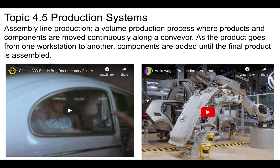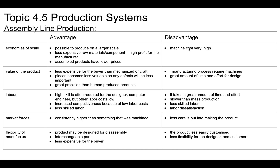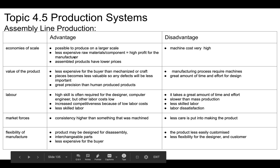I want you to have a quick look at this — it's a VW production line showing one that has humans doing the production. And then this is now what we see: automated production lines. This is the automated assembly production line, and computers are doing this — also from Volkswagen.